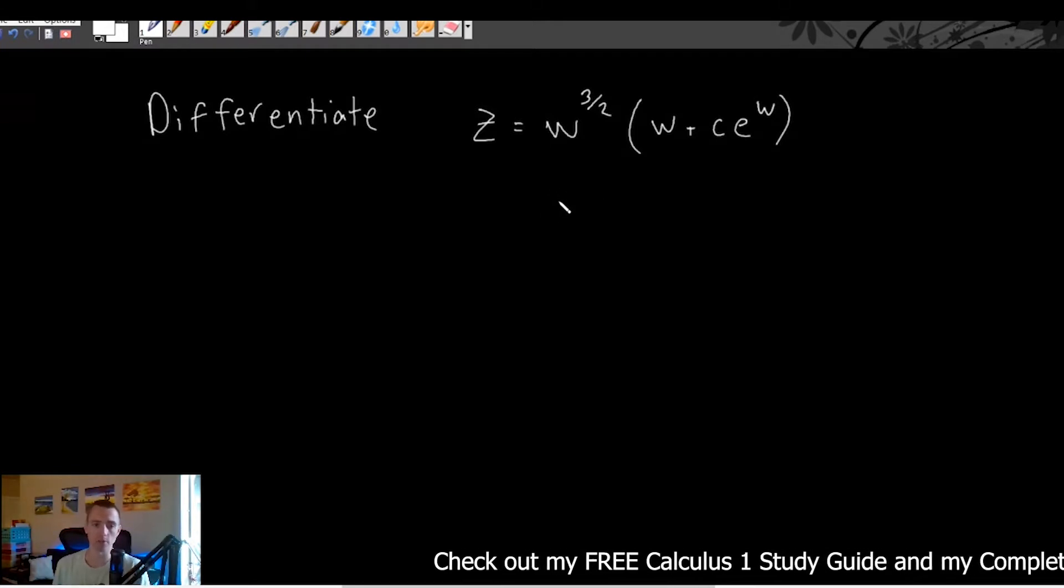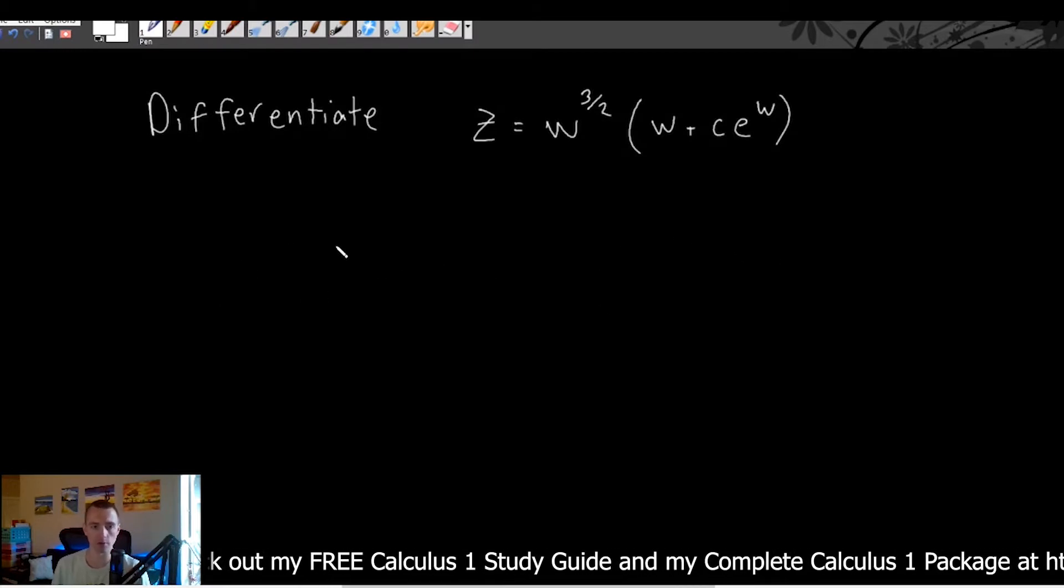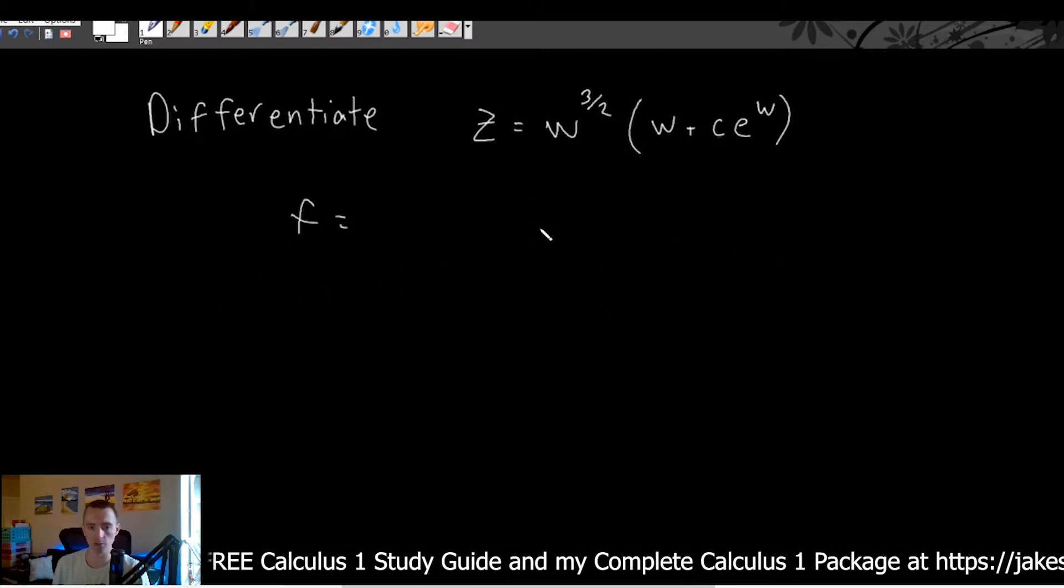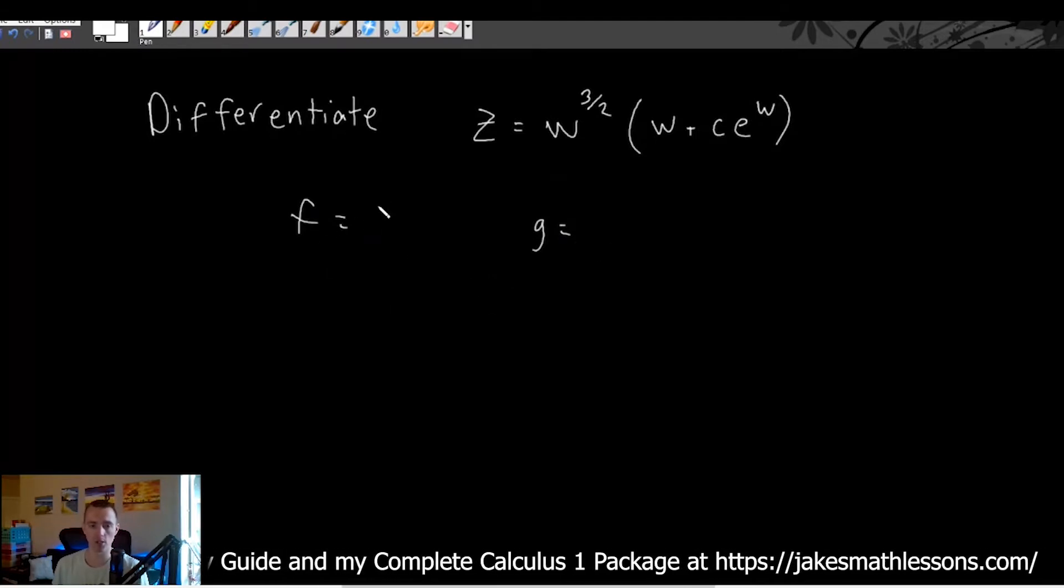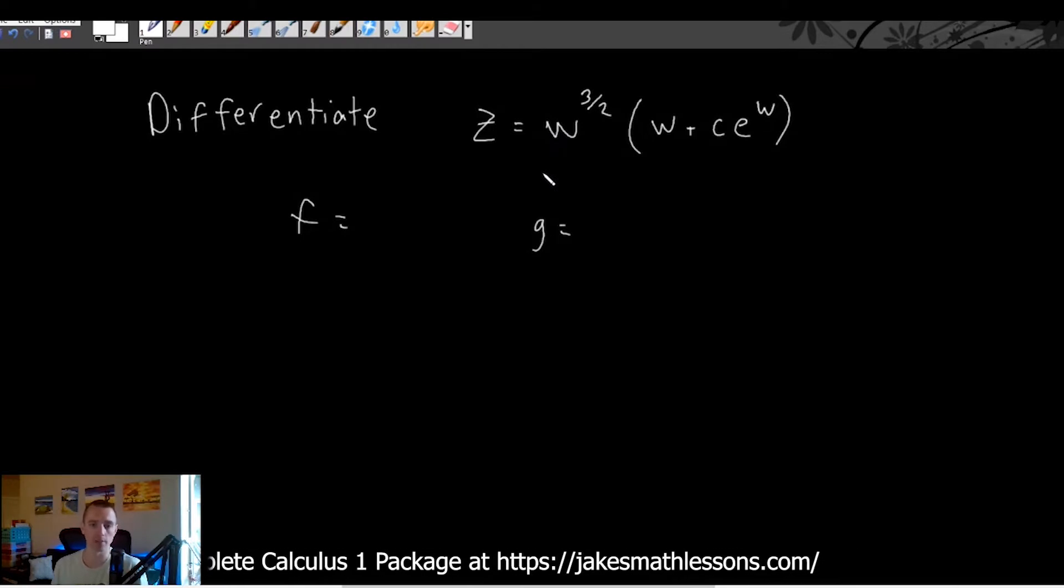The first step in doing these product rule problems is to first decide which thing you want to be your f, which thing you want to be your g. And like I said, it doesn't matter which thing you pick, as long as you're making sure that the f and the g are the two things that are being multiplied together.